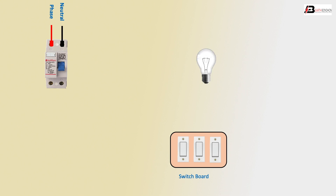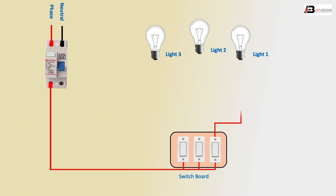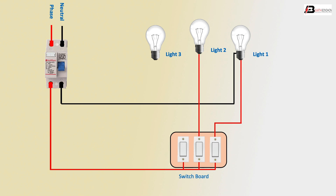The switchboard controls three lights: light one, light two, and light three. Phase input goes to the phase switch. The first, second, and third switch outgoing connect to light one, light two, with a common negative connection.